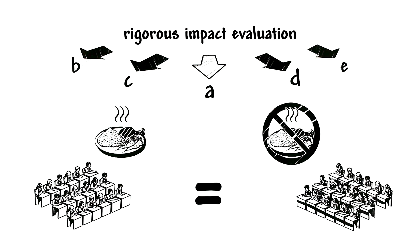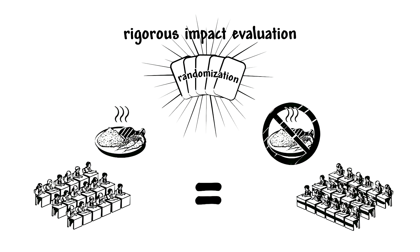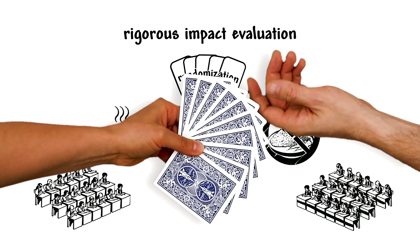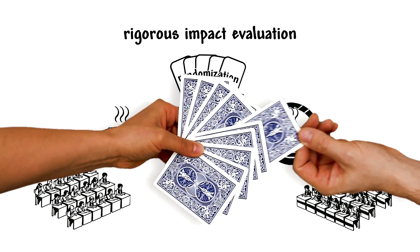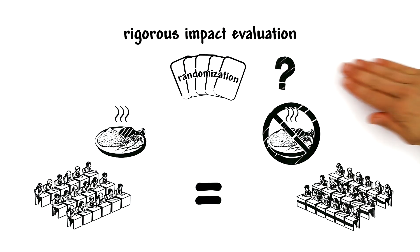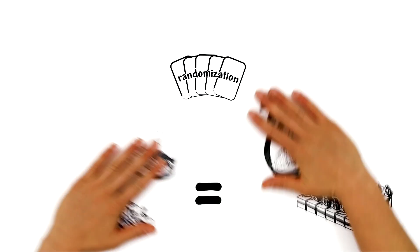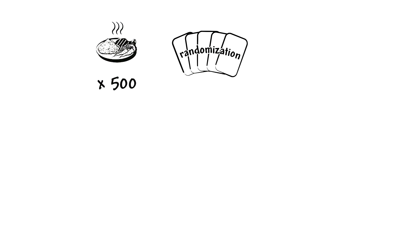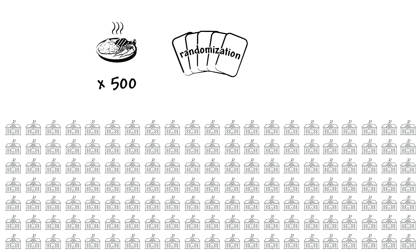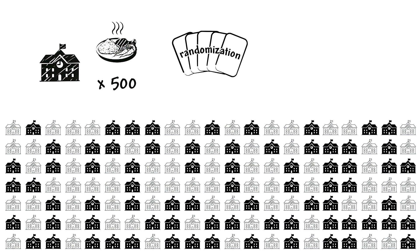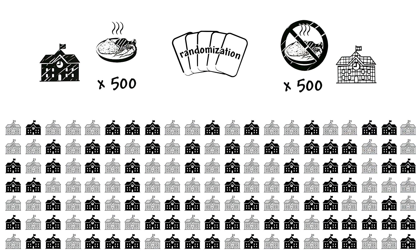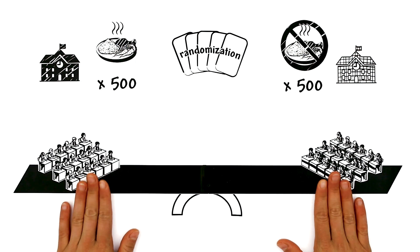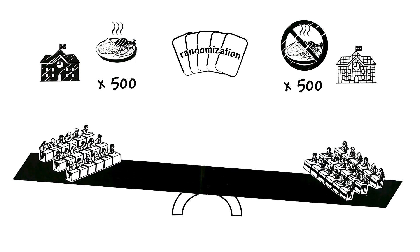The most reliable way to create these groups is randomization, which just means selection by chance. Let us suppose that the organization has just enough money to distribute meals in 500 schools. It draws lots among a thousand schools to select 500 at random, which will receive free meals and 500 that will not. Randomization ensures that, on average, the groups are as similar as possible in all respects.